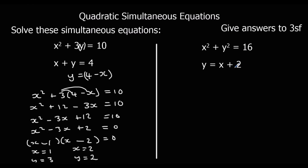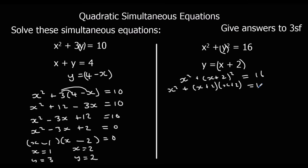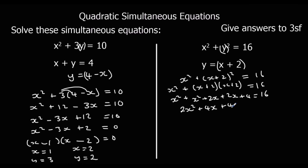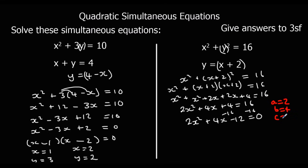For the second practice question, we have y equals x plus 2, so I substitute x plus 2 for y. That gives x squared plus (x plus 2) squared equals 16. Expanding the double bracket (x plus 2)(x plus 2) gives x squared plus 2x squared plus 4x plus 4 equals 16. Rearranging: 2x squared plus 4x minus 12 equals 0. So a equals 2, b equals 4, c equals minus 12.